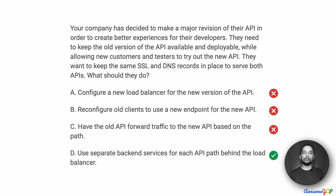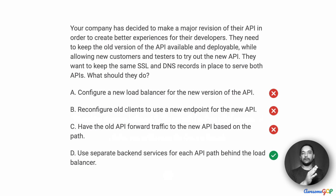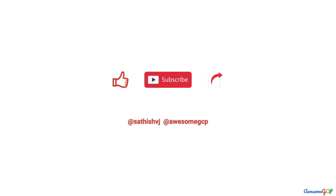The right approach is to use separate backend services for each API path and configure the URL path in the load balancer to route traffic to the appropriate backend. If you found that content useful, check out all our new upcoming content and subscribe right away.